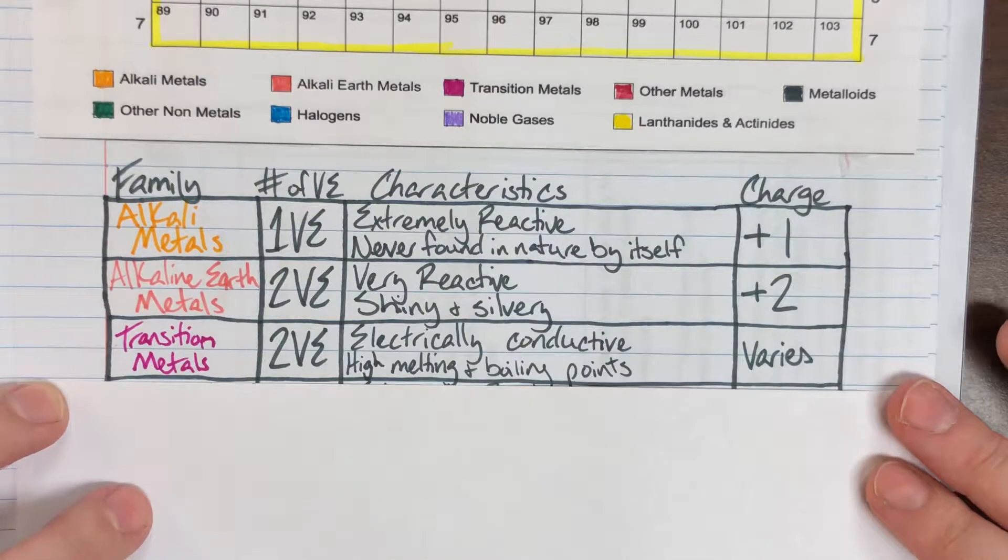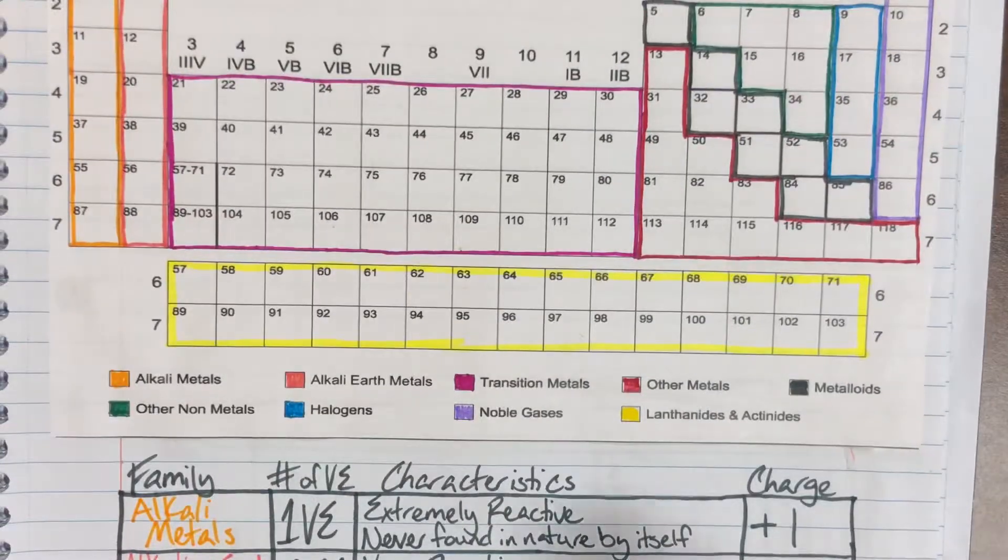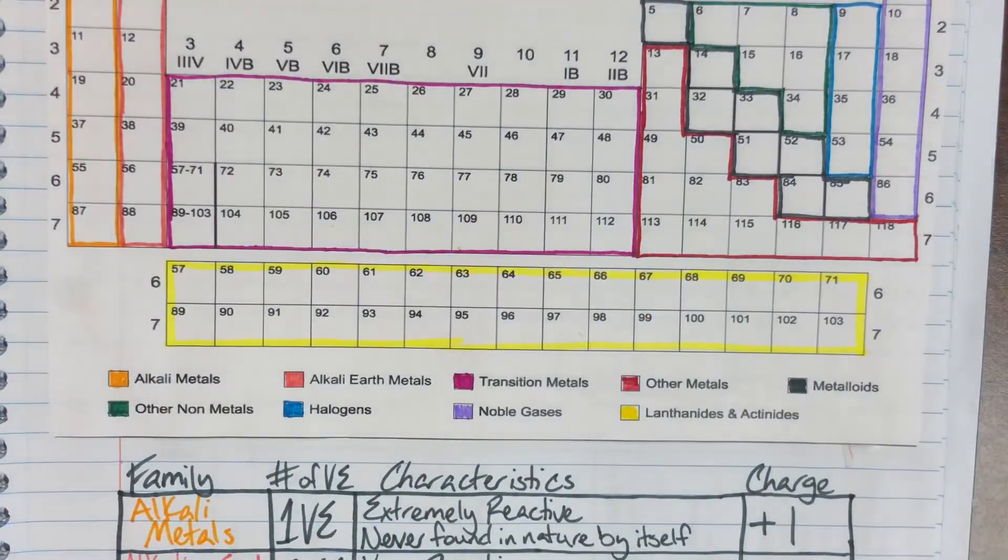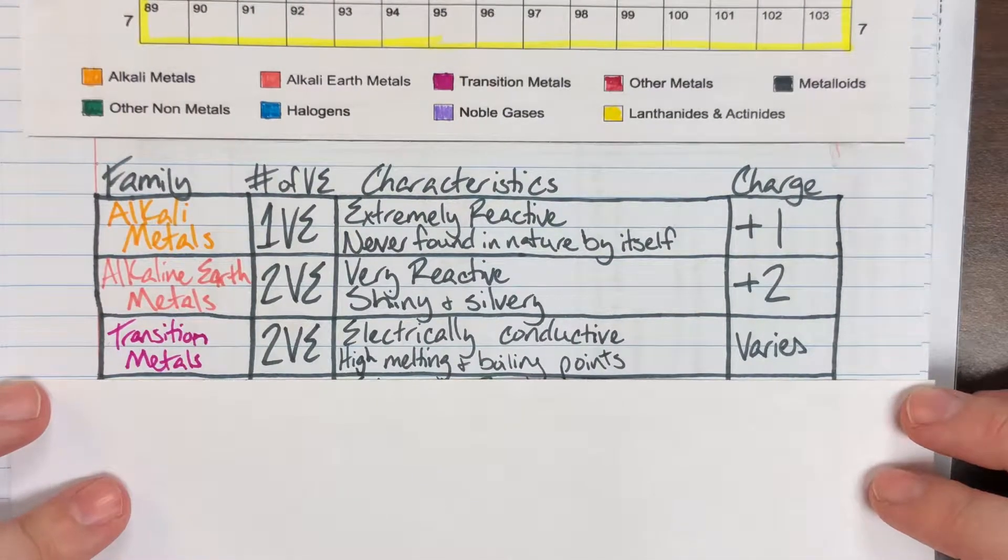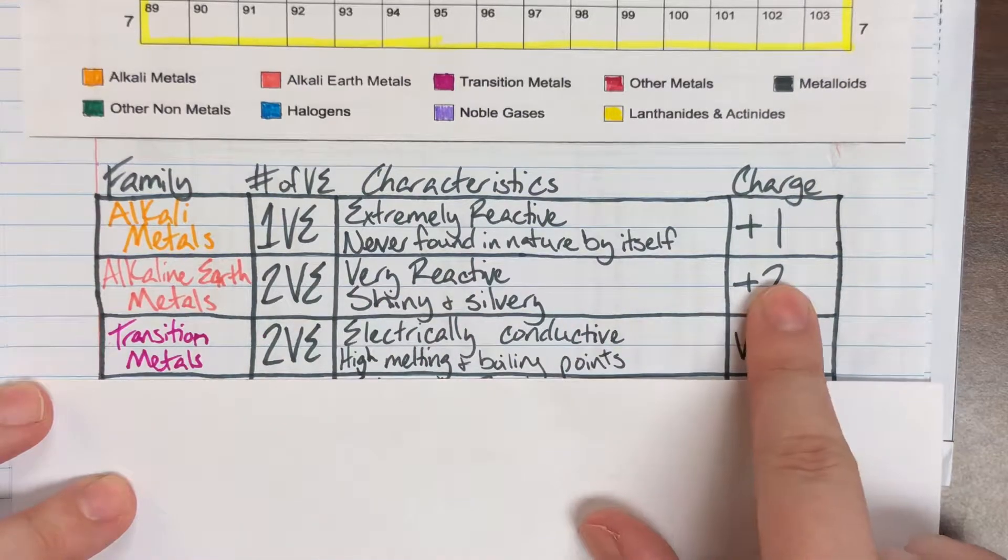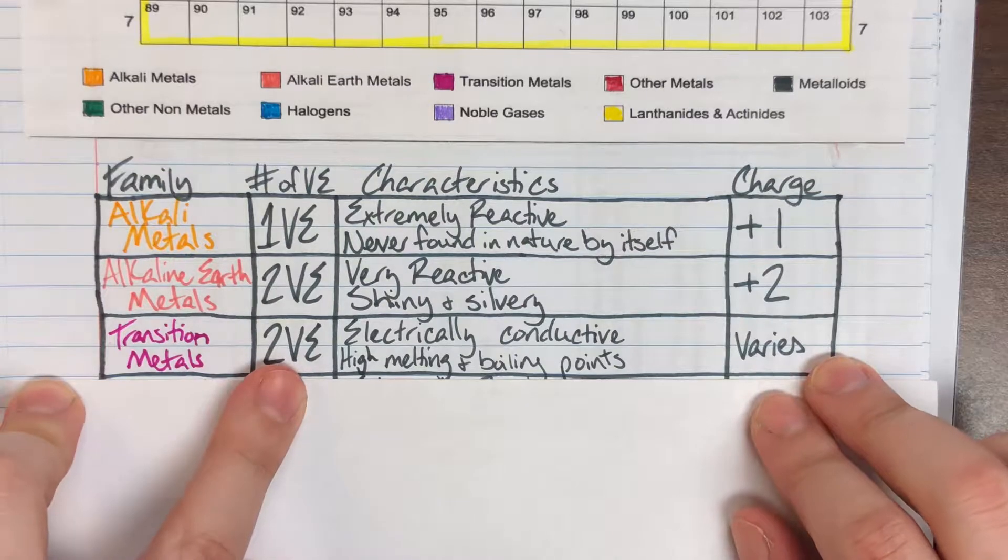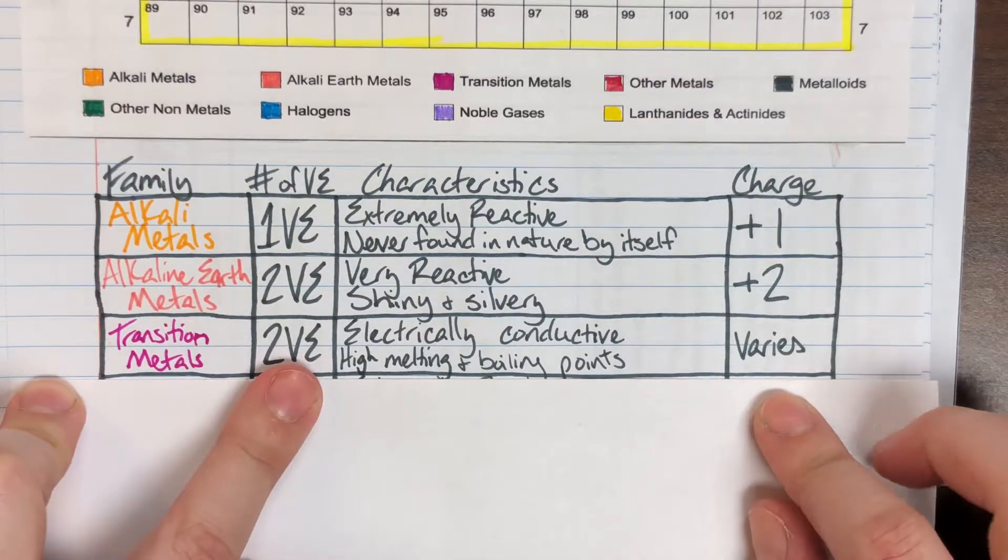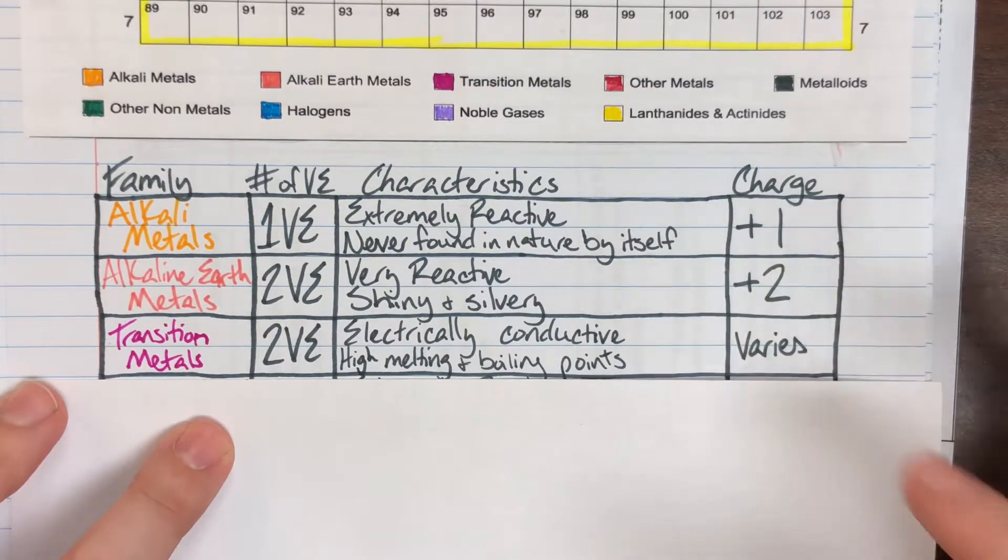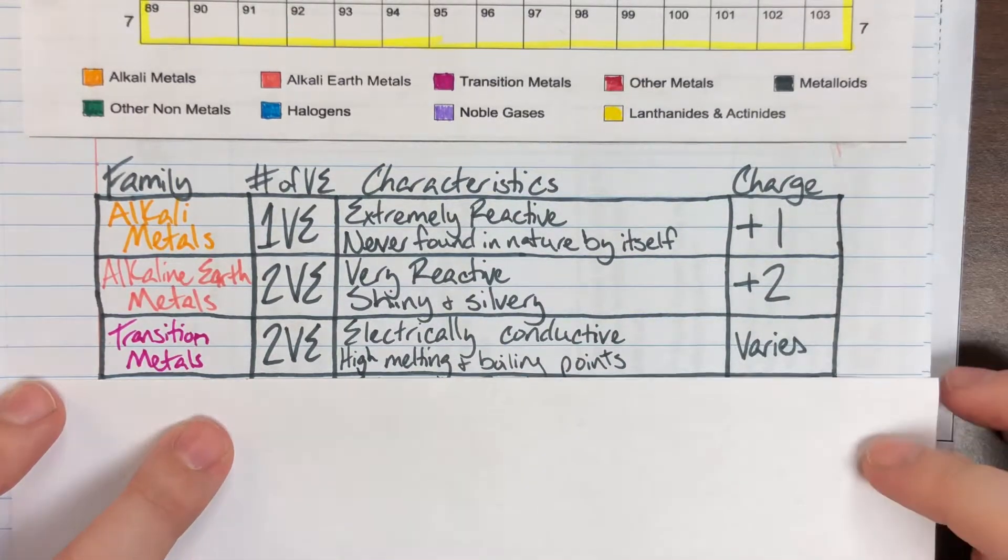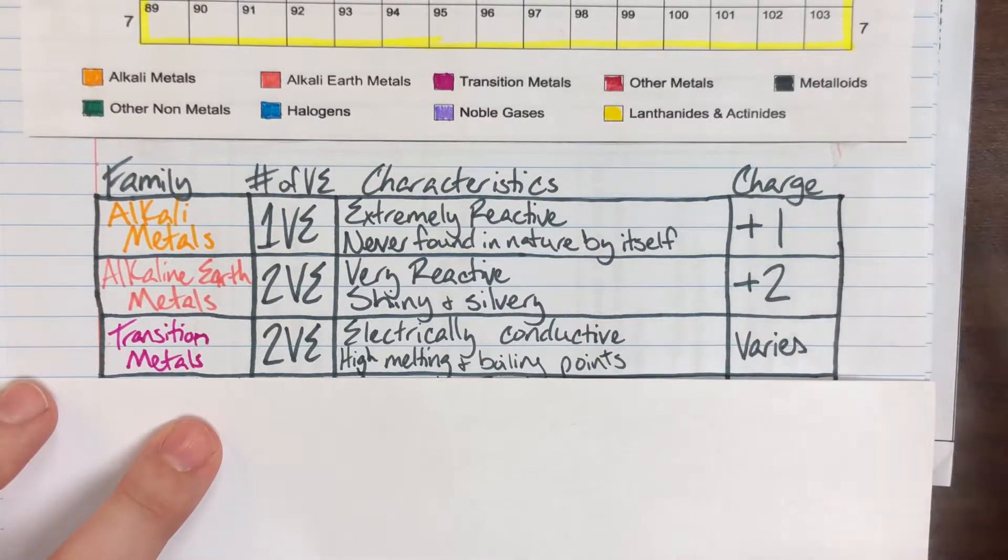Next we have transition metals, a very loose family. Transition metals are in this central block. They also have two valence electrons, but unlike alkaline earth metals, their charge is not just the positive version of the valence electrons. Their charge varies based on their situation and what they're dealing with individually, so we'll label that as varies.